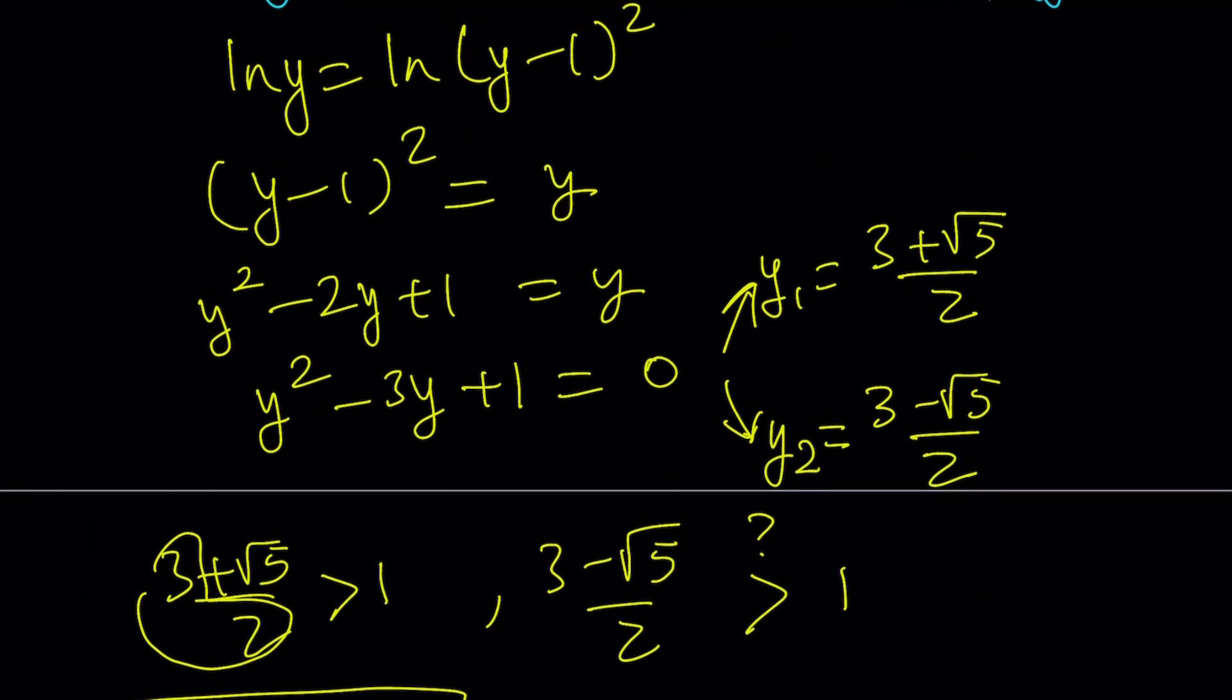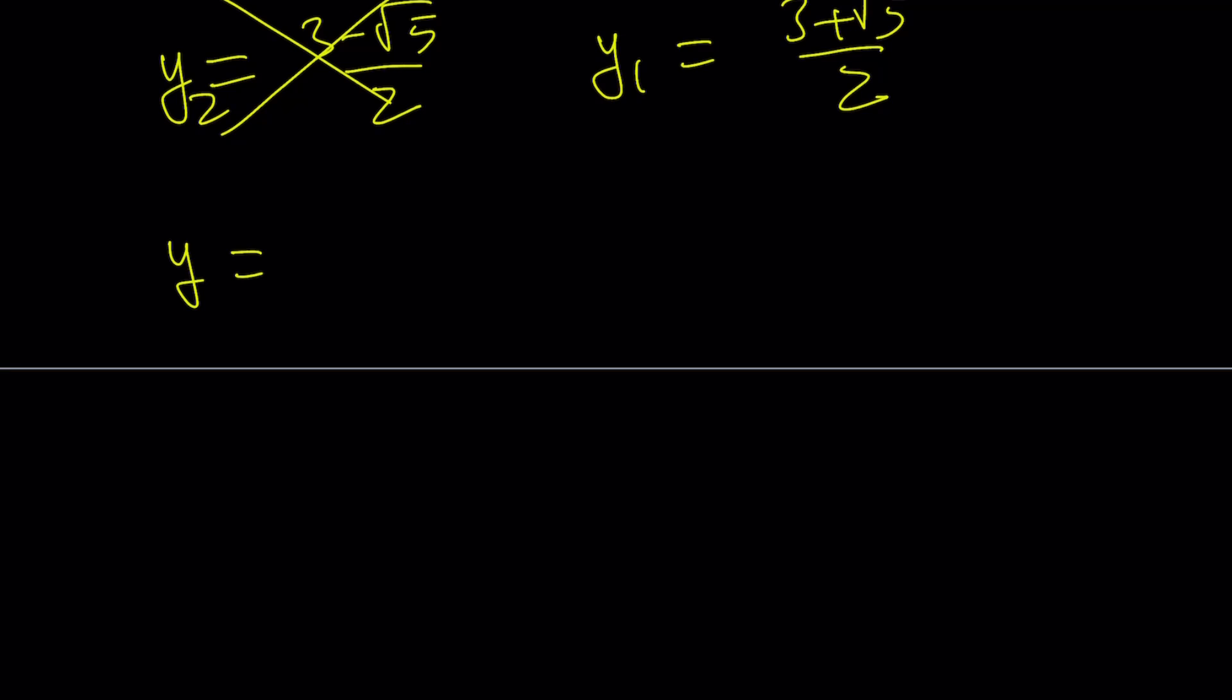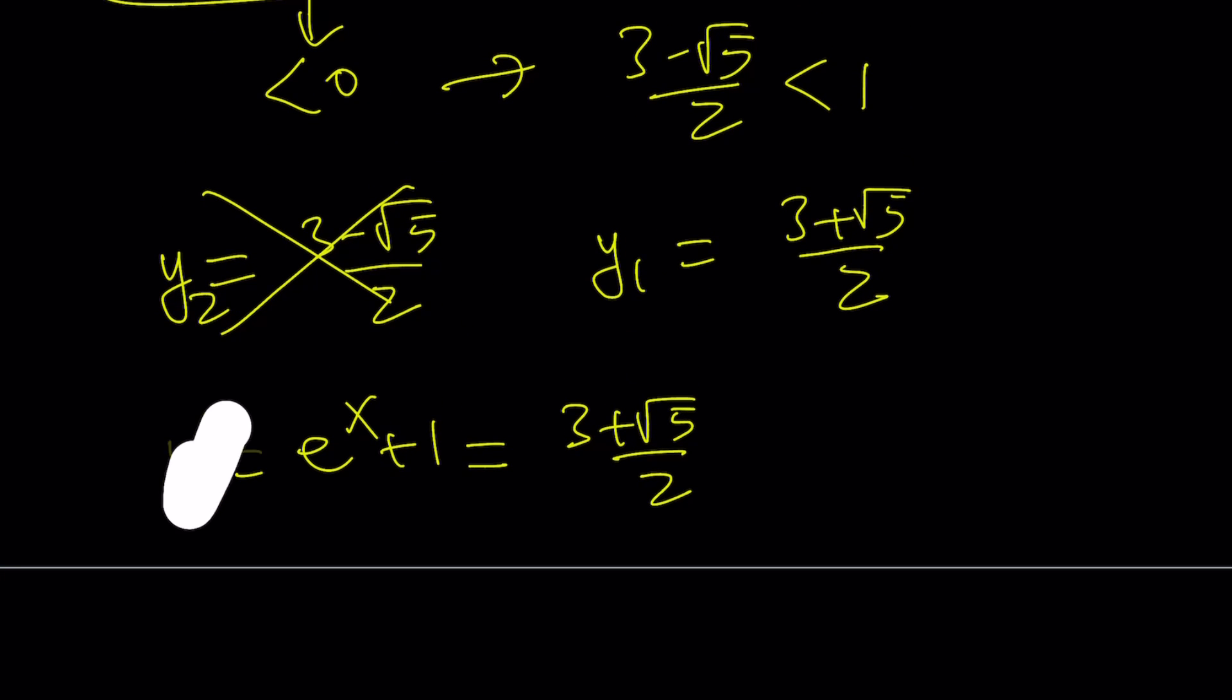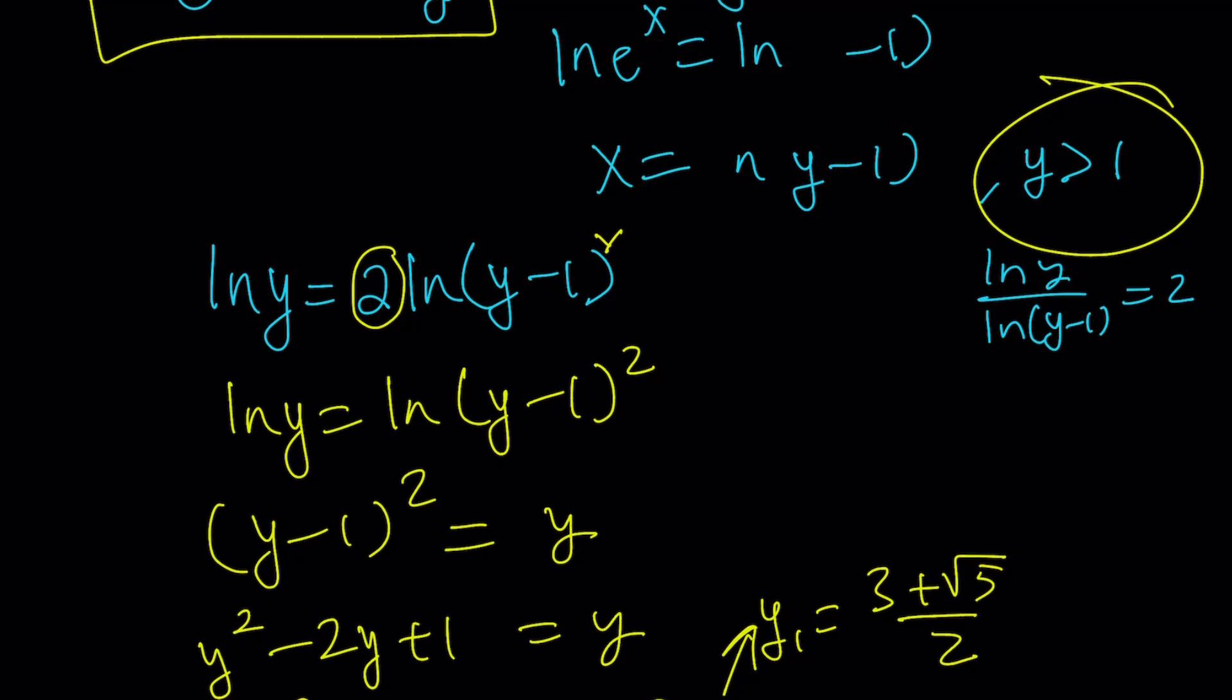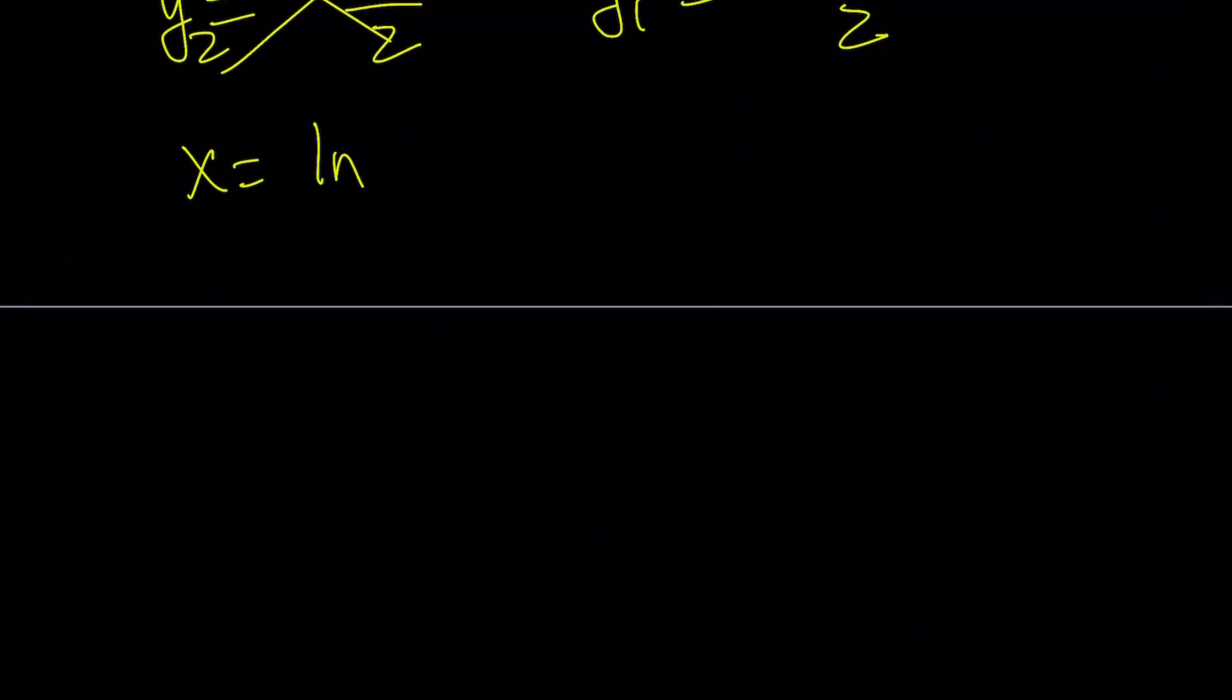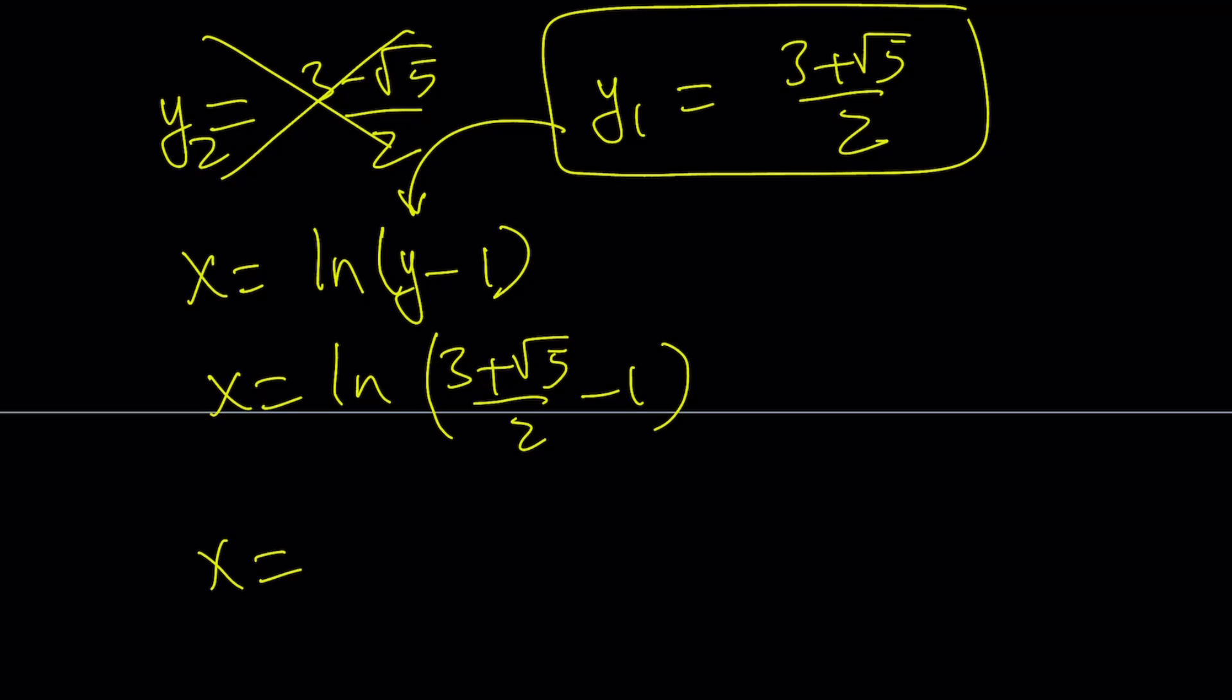So y₂ doesn't count, but y₁ does, and it's (3 + √5)/2. Now remember, y = e^x + 1. So let's go ahead and back substitute. But there's a faster way to do it, by using the x values directly. Remember, we got x = ln(y - 1). So x = ln(y - 1). That was the equation that gave us the idea that y should be greater than 1. So now, if you substitute (3 + √5)/2 here, you get x = ln((3 + √5)/2 - 1). If you make a common denominator and subtract, you should be getting ln((1 + √5)/2).